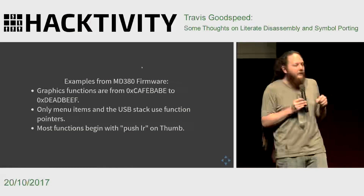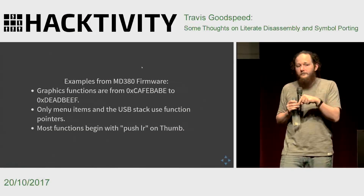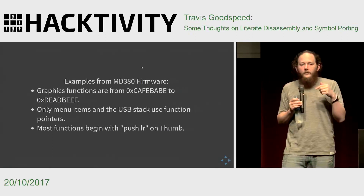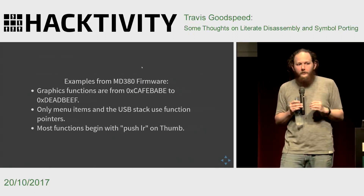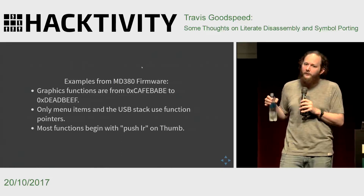These high-level observations are not true for every program — they won't be true for obfuscated programs, heavily inlined programs, or programs where the programmer threw everything into a single C file. But they are true for a lot of programs. By verifying that they're true on your individual target and then scripting them, you'll be able to automatically label large chunks of your program and reduce the labor of reverse engineering it.